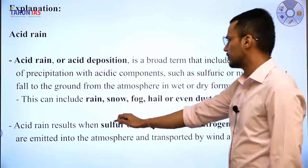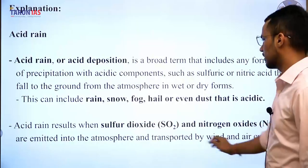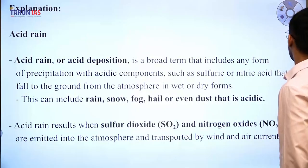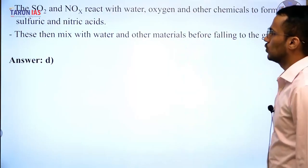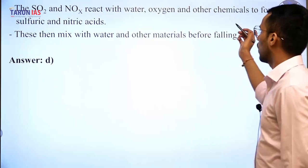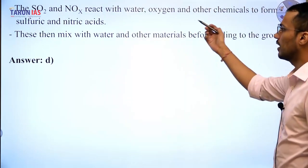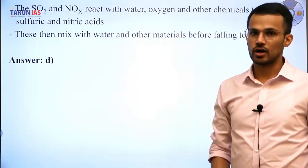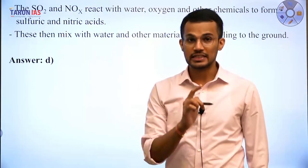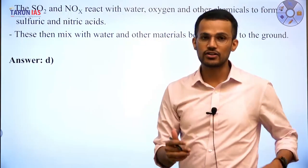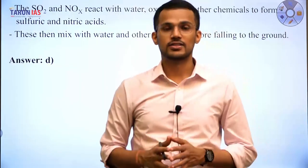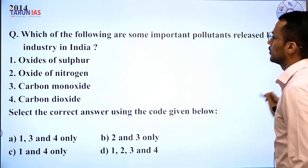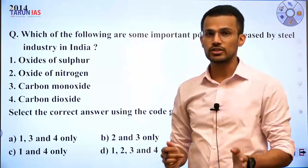Acid rain results when sulfur dioxide and nitrogen oxides are emitted into the atmosphere, transported by wind and air currents to upper layers. SO₂ and NOx react with water, oxygen, and other chemicals to form sulfuric and nitric acids, which mix with water before falling to the ground. The answer is D — nitrogen oxides and sulfur dioxide. That completes the 2013 questions.